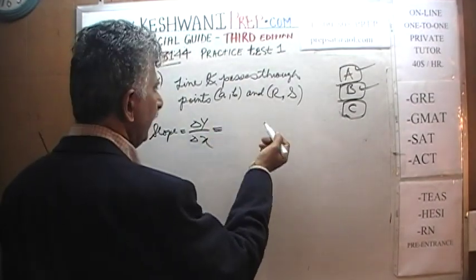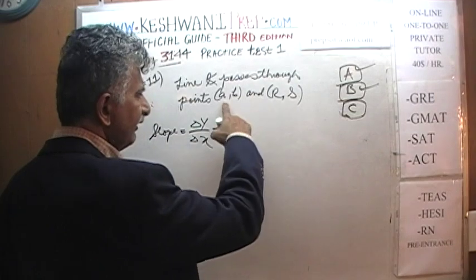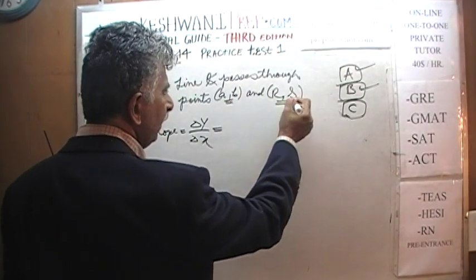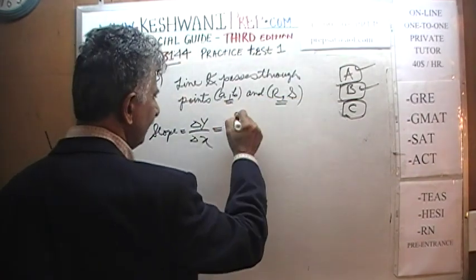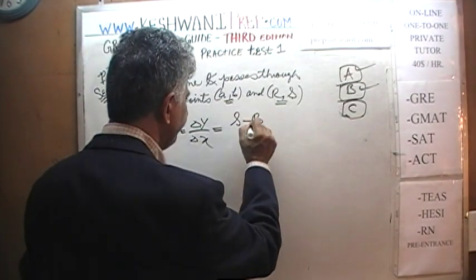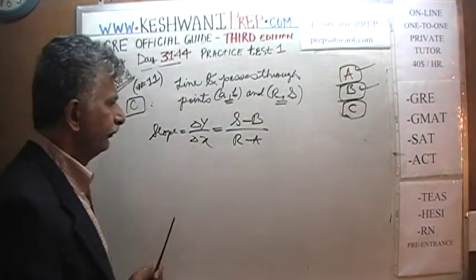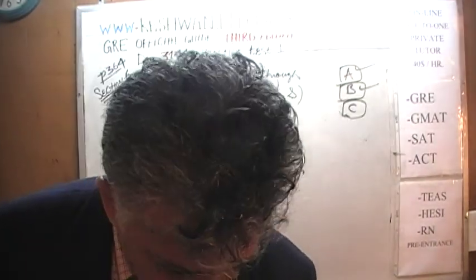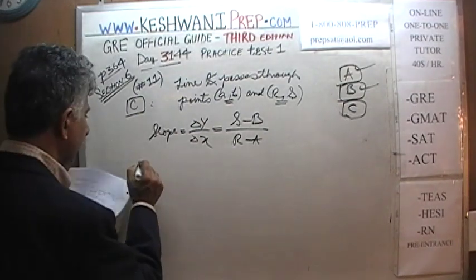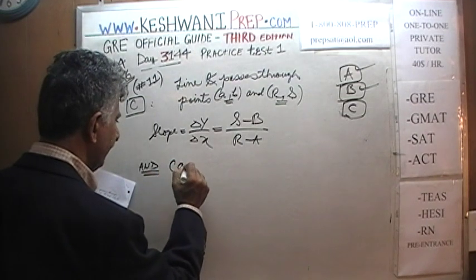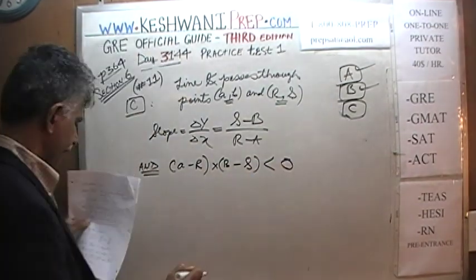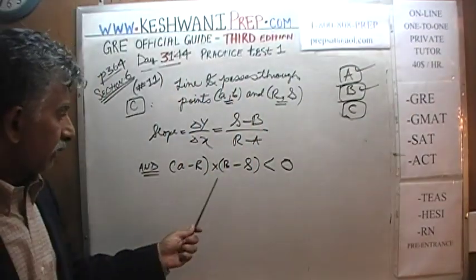Treating (R, S) as the final point and (A, B) as the starting point, the change in Y is S minus B and the change in X is R minus A, giving slope = (S − B) / (R − A). They also tell us that the product (A − R) times (B − S) is negative — less than zero. If the product of two quantities is negative, there are only two possibilities: either the first quantity is positive and the second is negative, or the first is negative and the second is positive.